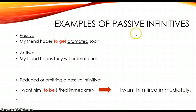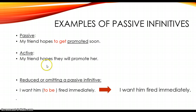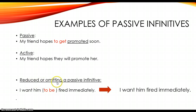Examples of passive infinitives: 'My friend hopes to get promoted soon' — I'm focusing on the receiver. This is the active form: 'My friend hopes they will promote her.' The passive is focusing on the receiver, or when the performer of the action is not important. I can also reduce or omit a passive infinitive.